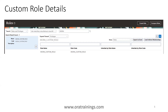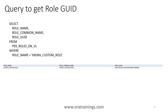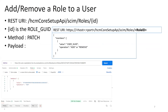In this session we want to discuss how to add a role to a user or remove a role from a user. I've created a custom role for this purpose. You also need to get the GUID of a role, and using this query you can retrieve the role GUID. So we have two queries: one to get the user GUID and another to get the role GUID.